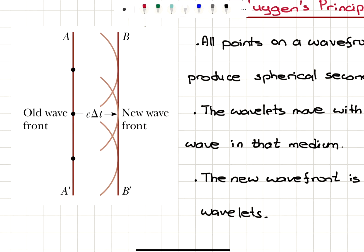So we have a wavefront, and each point on this wavefront acts as a source of spherical secondary waves. You can see that this point produces this wavelet, this point produces this wavelet, and this point produces this wavelet. They all interfere to produce the new wavefront, which is between B' and B.